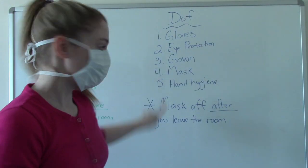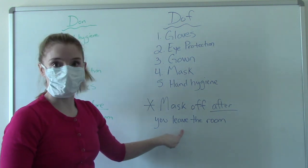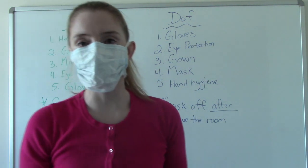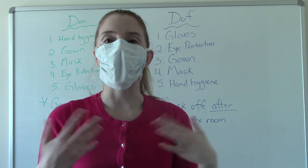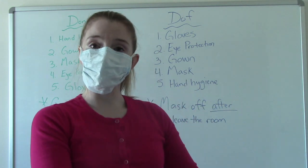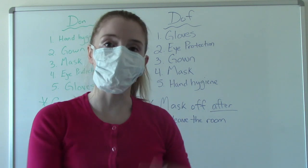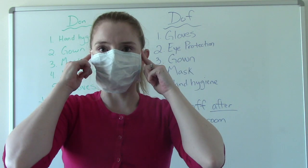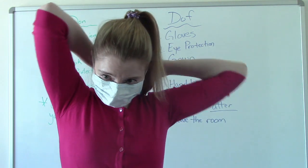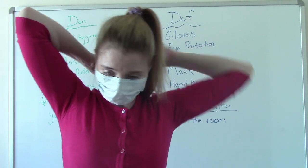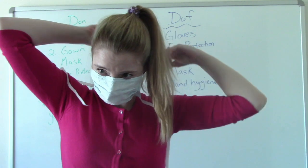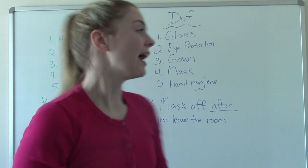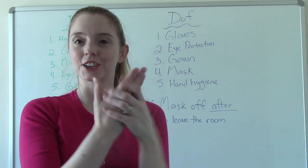Then we do our mask after we leave the room — that's the big thing. If your patient is on isolation where you require a mask, take it off after you leave the room. Everything else you take off as you're leaving, right by the front door. But as soon as you walk out of the room, that's when we take off our mask. Then the final step: wash our hands.